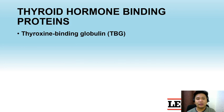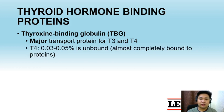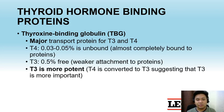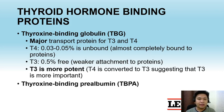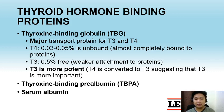Thyroid hormones require thyroid hormone binding proteins for them to circulate. The major transport protein for T3 and T4 is thyroxine-binding globulin. T4 is almost completely bound to proteins, whereas T3 has weaker attachment to proteins, so more T3 is free in circulation — making T3 more potent. Other binding proteins include thyroxine-binding prealbumin, also called transthyretin, and serum albumin.